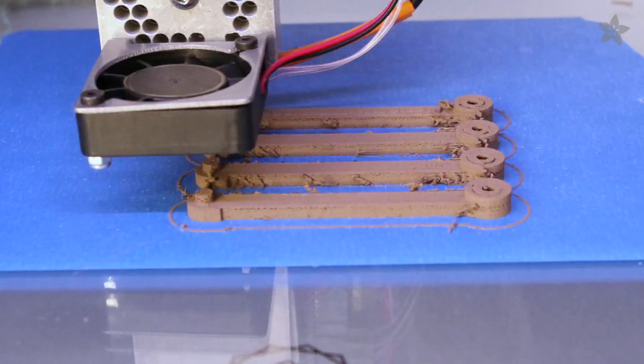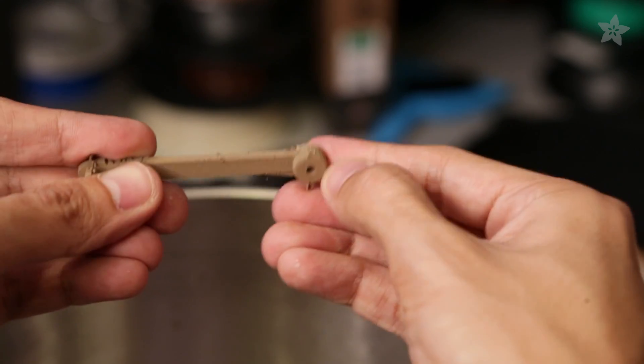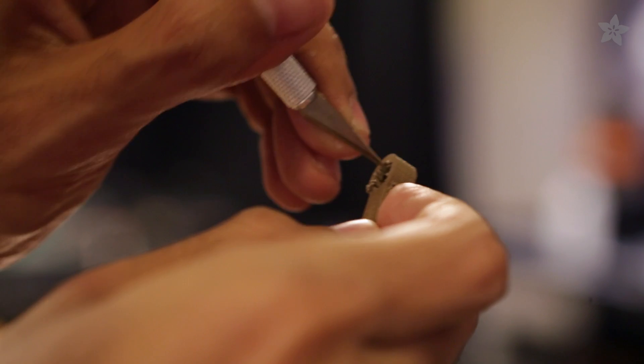These parts tend to come out with stringy bits due to retraction and oozing, but this can easily be cleaned up using diagonal flush snips and a hobby knife to get in between all of the nooks and crannies.